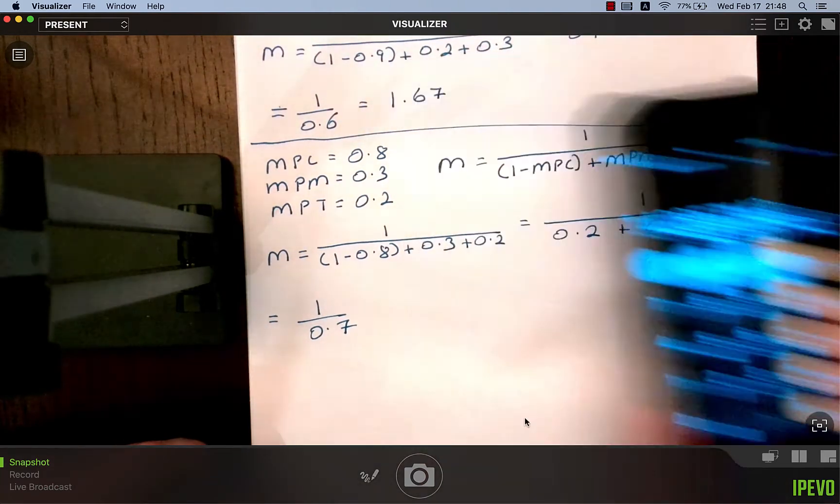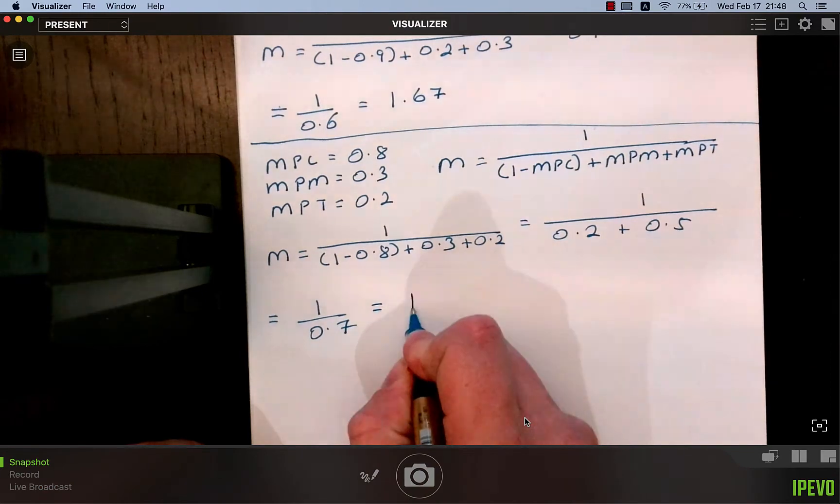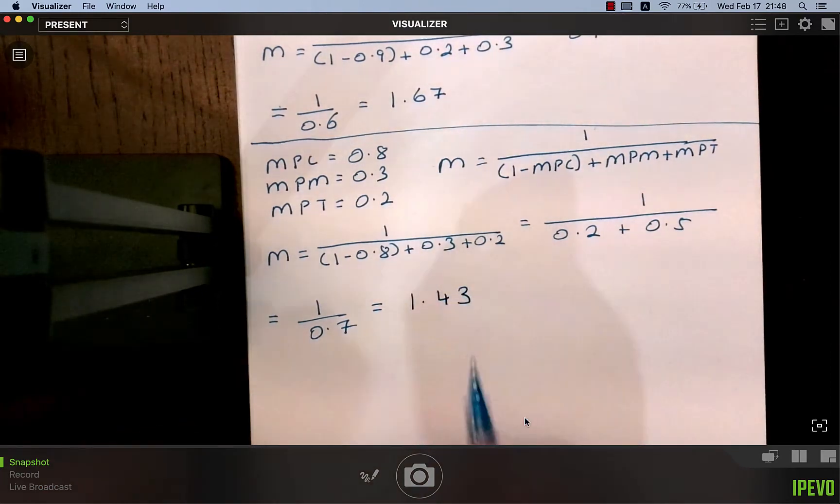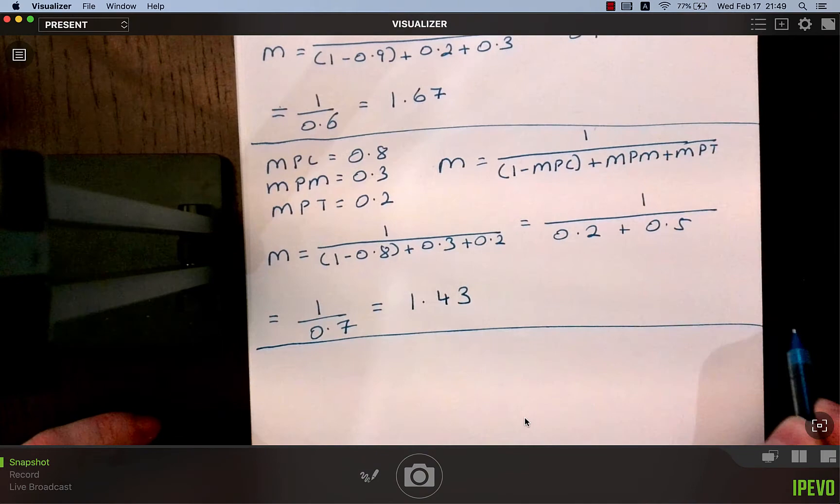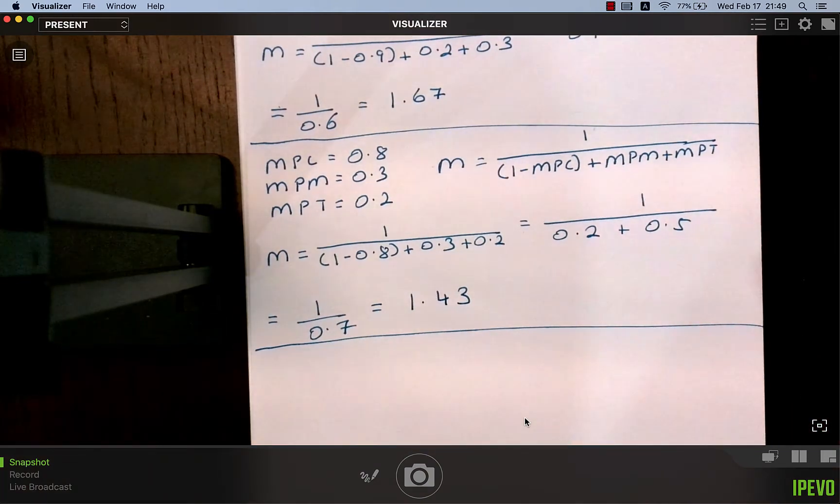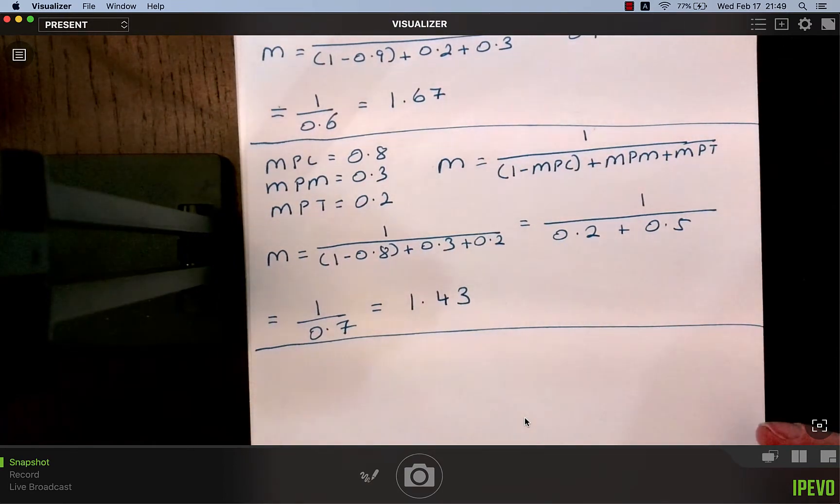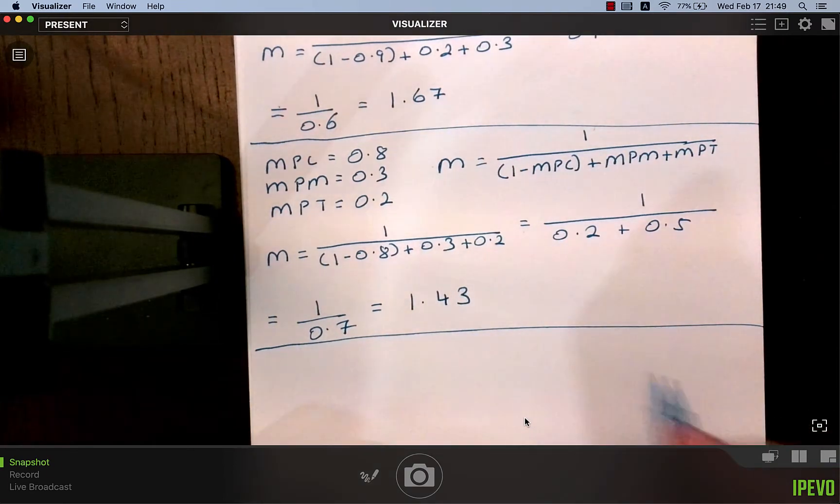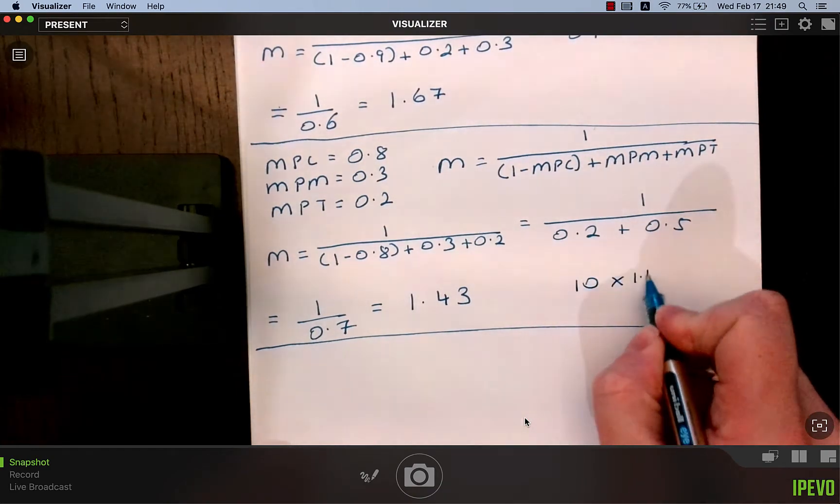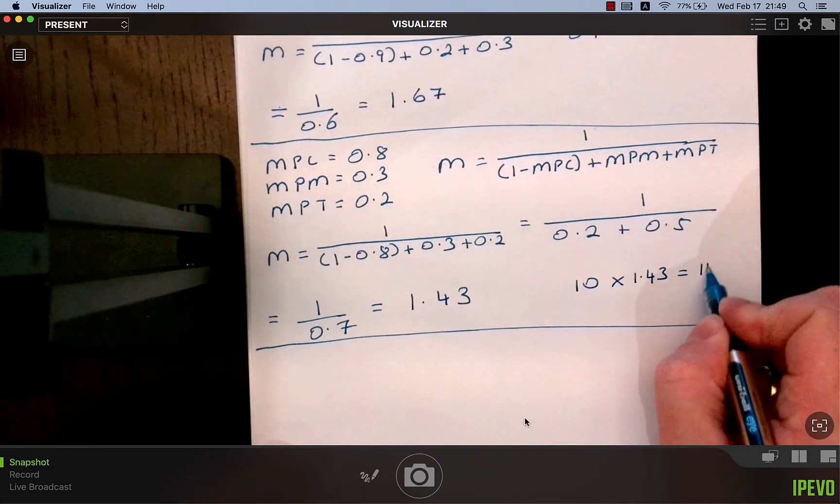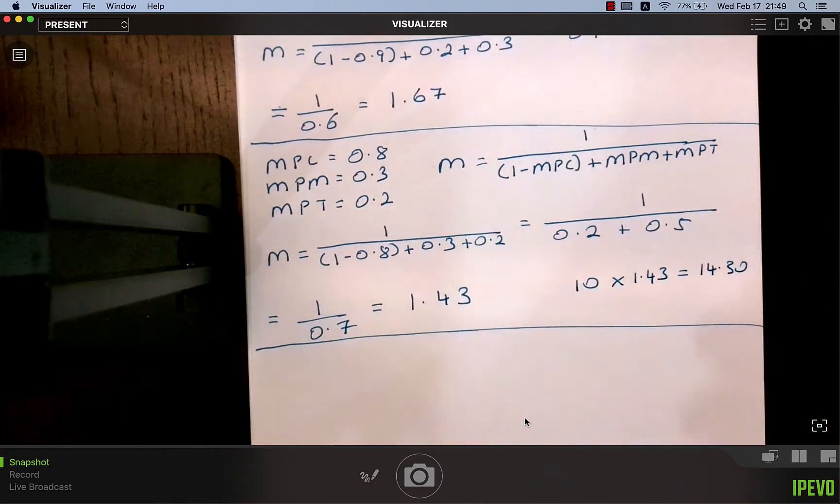The multiplier equals 1.43. These numbers are not important, no matter how nice or not nice they are. If there's an initial injection into the entire economy of 10 euro, national income will rise by 14 euro and 30 cent. Because it's 10, which is the injection, times the multiplier equals 14 euro and 30 cent. That's why it's called the multiplier. You multiply the initial injection by it.